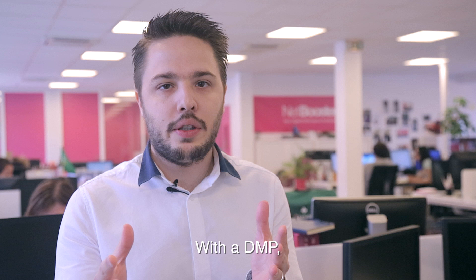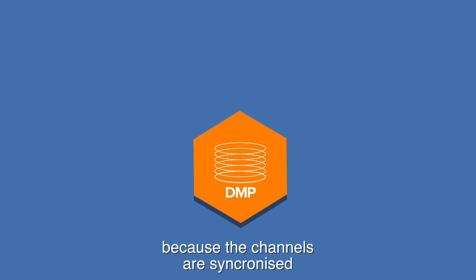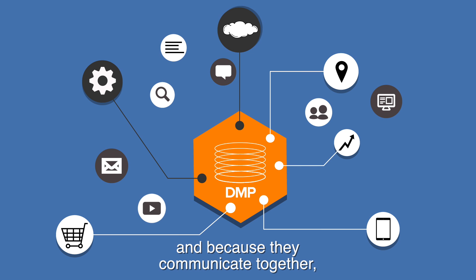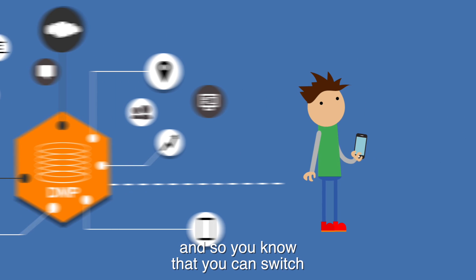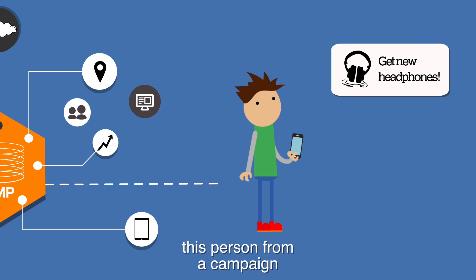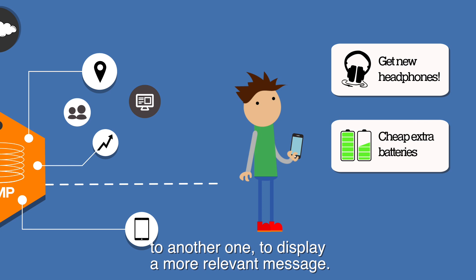With a DMP, because the channels are synchronized and because they communicate together, you know that this specific person already bought this product. And so you know that you can switch this person from one campaign to another to display a more relevant message.